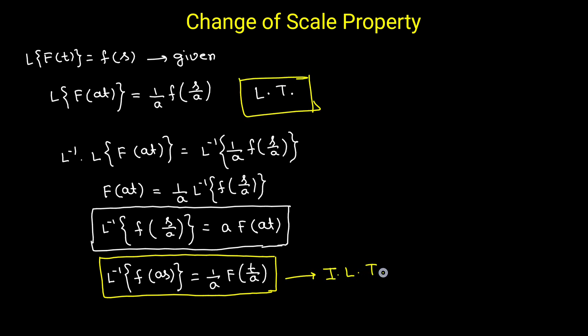If the variable t is multiplied by a scalar number a, you can use the scale property. For example, to calculate L{sin(2t)}: here f(t) = sin(t) and the variable t is multiplied by scalar number 2, so you can use the scale property.